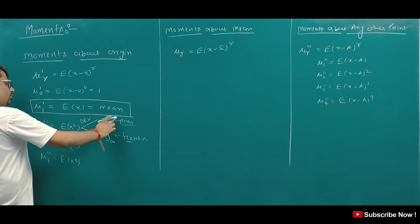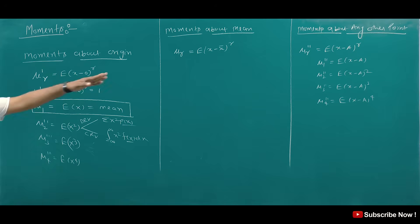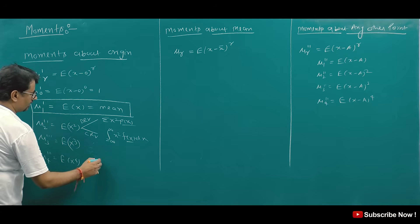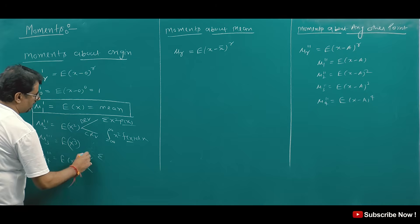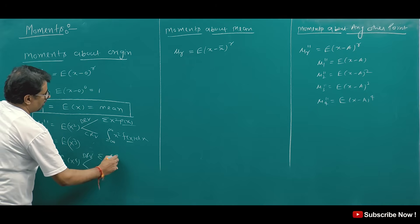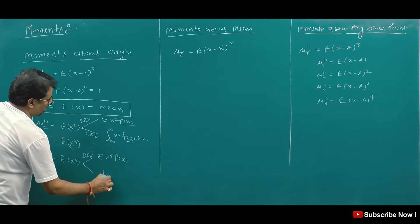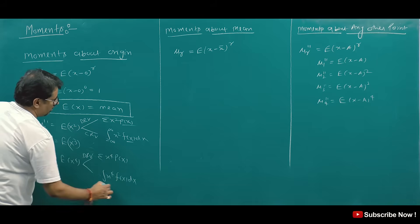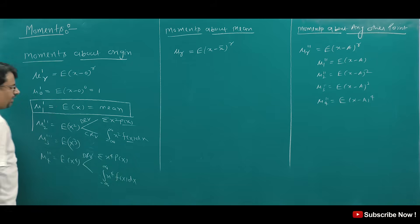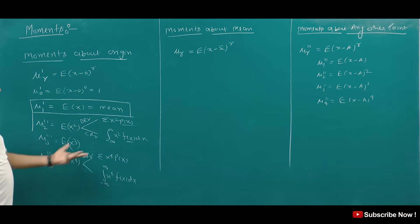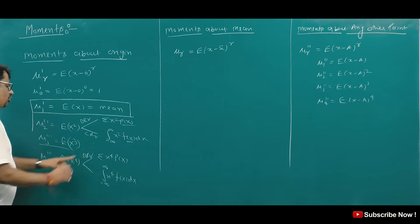For the fourth moment with a discrete random variable, we use summation of x to the power 4 times p(x). For a continuous random variable, we use integration from minus infinity to infinity of x to the power 4 times f(x) dx. Now let's talk about the moments about mean. The zeroth moment about mean is 1. The first moment about mean, mu_1, is 0 — because E(x minus x-bar) equals E(x) minus x-bar, which equals x-bar minus x-bar equals 0.